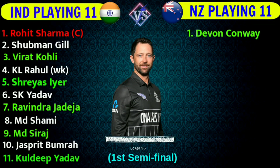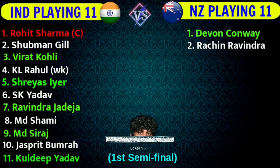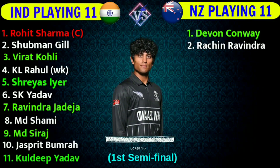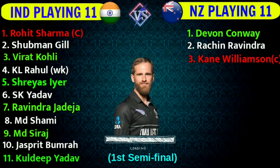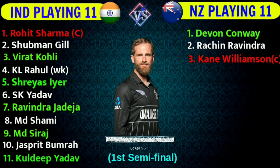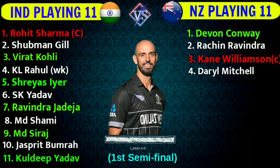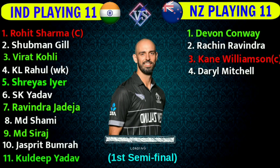New Zealand team best playing 11. Number 1: Devon Conway, left-handed batsman. Number 2: Rachin Ravindra, left-handed batsman. Number 3: Kane Williamson, Captain and right-handed batsman. Number 4: Daryl Mitchell, all-rounder.